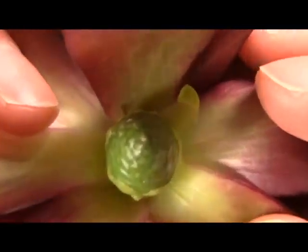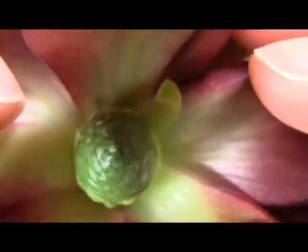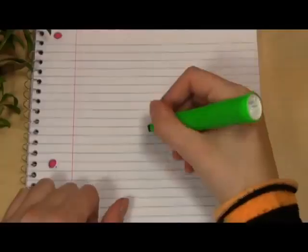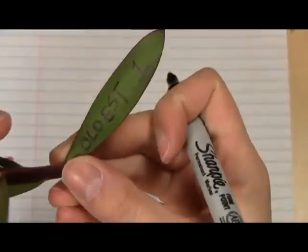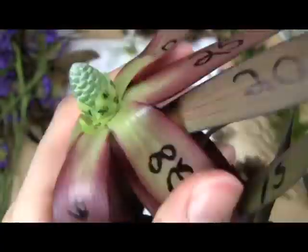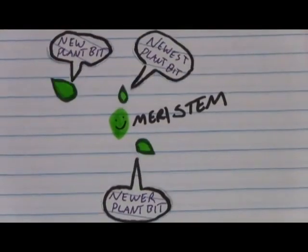If you zoom in on the tip of a plant, the growing part, there's this part called the meristem. That's where new plant bits form. The biggest plant bits were the first to form off the meristem and the little ones around the center are newer. As the plants grow, they get pushed away from the meristem, but they all started there.